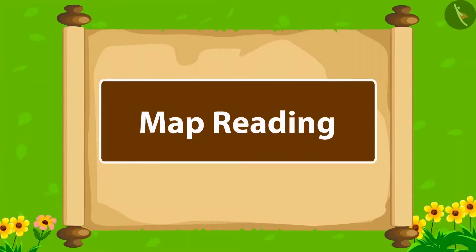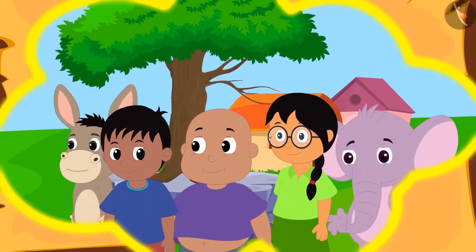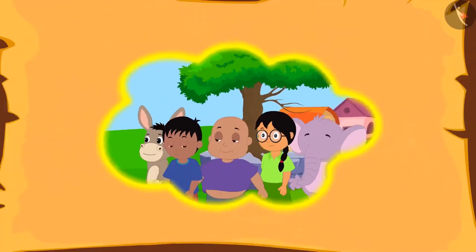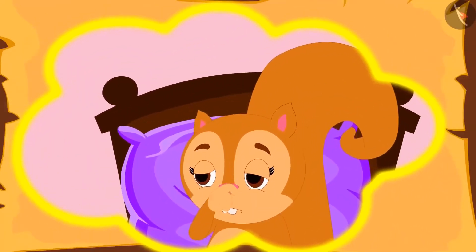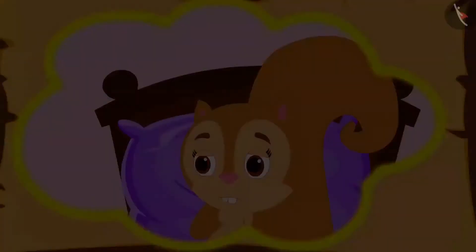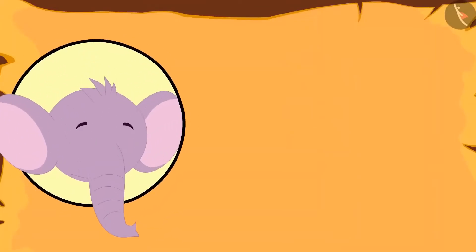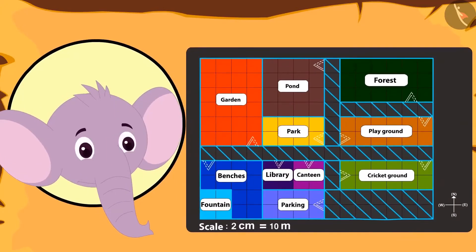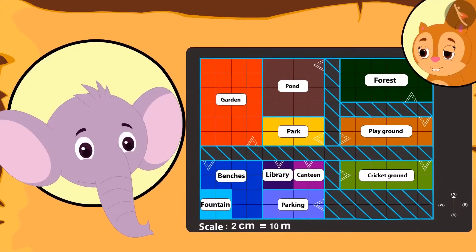Today we will learn more about reading a map. Everyone from school went on a trip, but being sick, Chanda could not go on the trip. While returning, Appu brings for Chanda a map of that place. He wanted to tell Chanda about what he saw there.